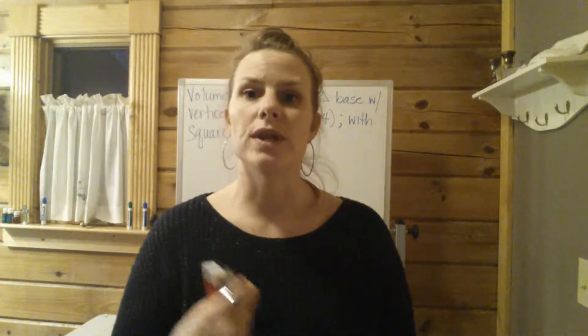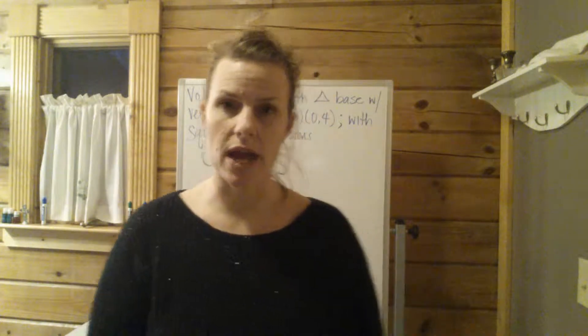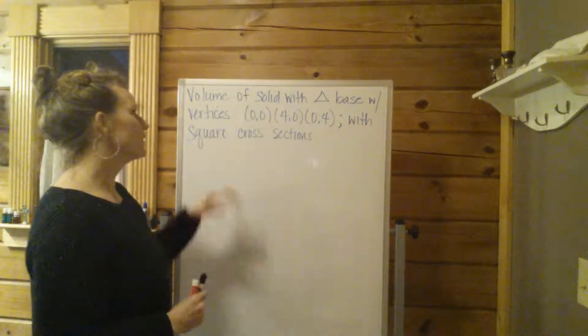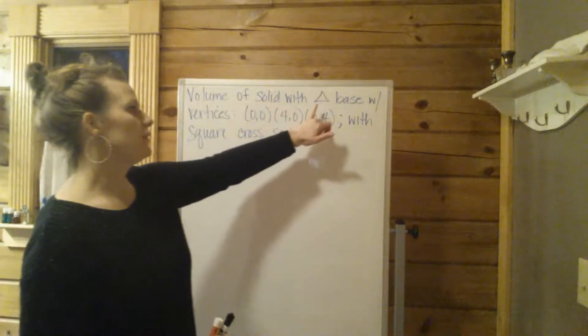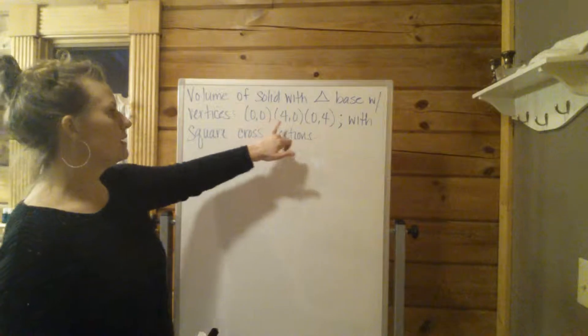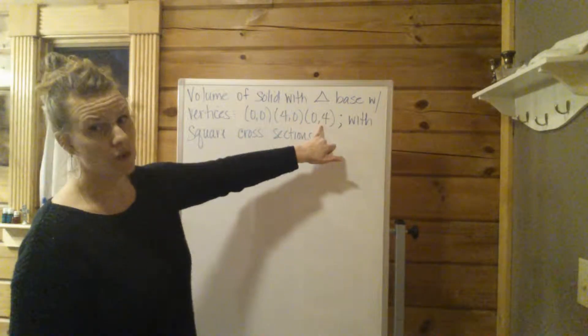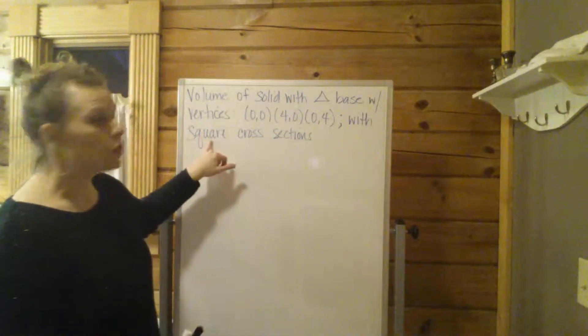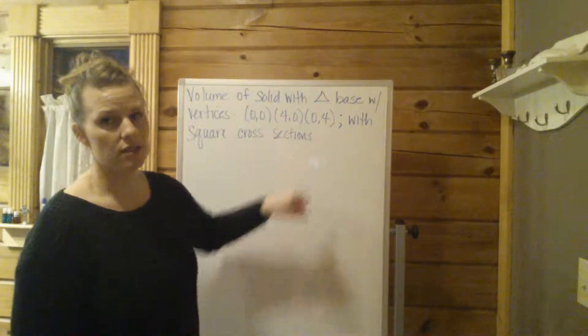Volume of a solid with given cross sections. So this problem in particular is a volume of a solid with a triangular base with vertices of 0,0, 4,0, and 0,4 with square cross sections.